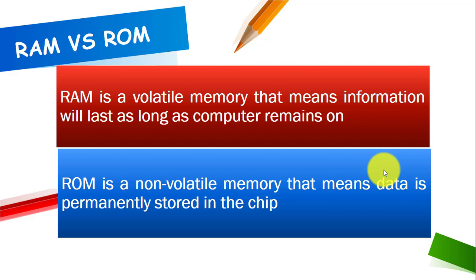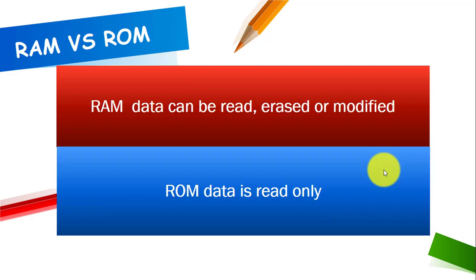RAM information will only be lost as long as the computer remains on. Whereas ROM is a non-volatile memory, that means the data is permanently stored in a chip. Whether the computer remains on or off, it doesn't affect the data — the data will be permanently stored in the chip.